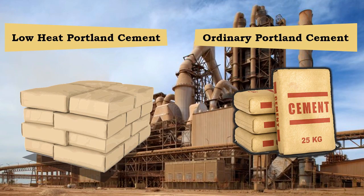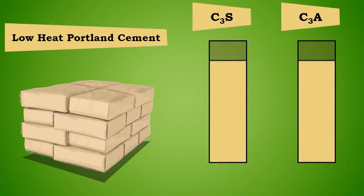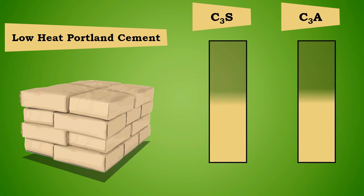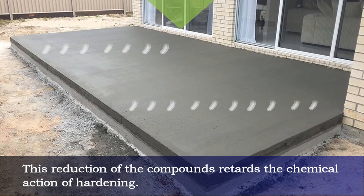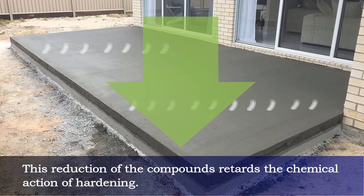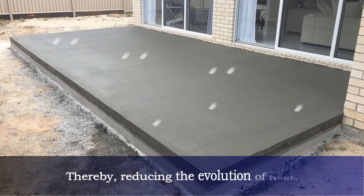The compounds evolving the maximum heat of hydration, such as C3S and C3A, are reduced, whereas the C2S compound is increased. This reduction of the compounds retards the chemical action of hardening, thereby reducing the evolution of heat.